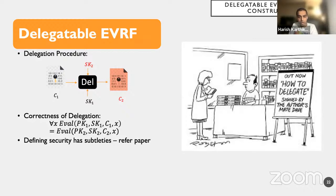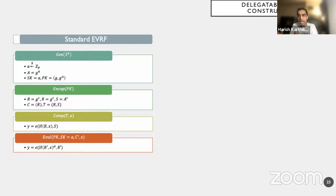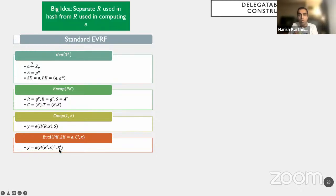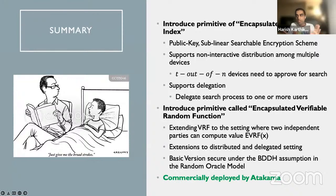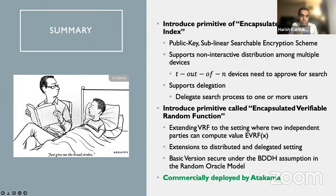The generic ESI construction runs the EVRF key gen to produce a public/secret key pair. The index procedure computes NCAP, uses the trapdoor T to compute EVRF values, and inserts every value Y into a sublinear search structure. The search procedure uses the eval algorithm to search in the sublinear dictionary. We achieve threshold security by combining our standard EVRF with verifiable secret sharing, getting t-of-N security. We also have a delegatable EVRF. This is also commercially deployed by Atacama with clients extensively using it. Thank you.